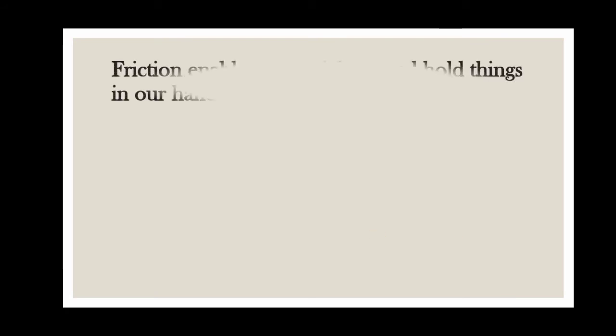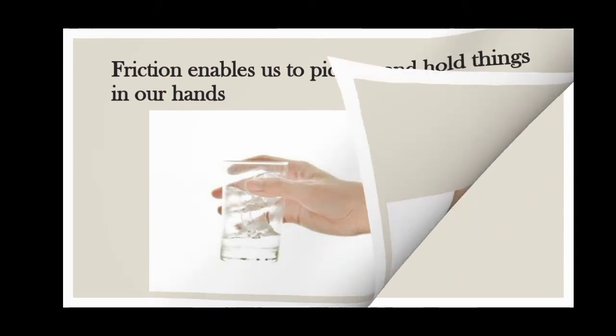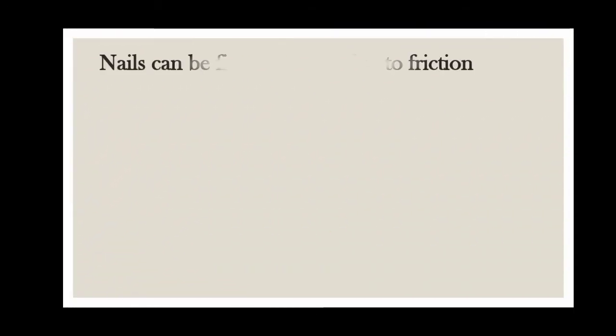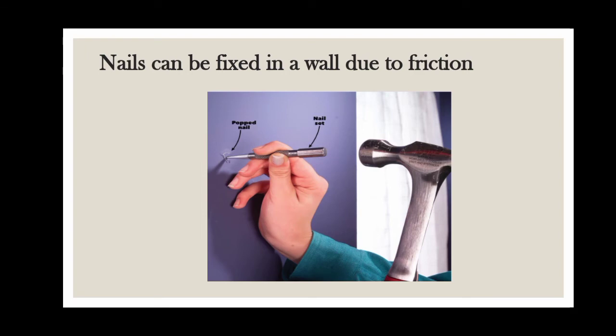The next advantage: friction enables us to pick up and hold things in our hands. Nails can also be fixed in a wall due to friction. When we hammer a nail into the wall, it is the friction between the surface of the nail and wall which holds the nail tightly in the wall. Without friction, nails cannot be fixed in a wall to hold things. Nails and screws are also held in wood by friction.